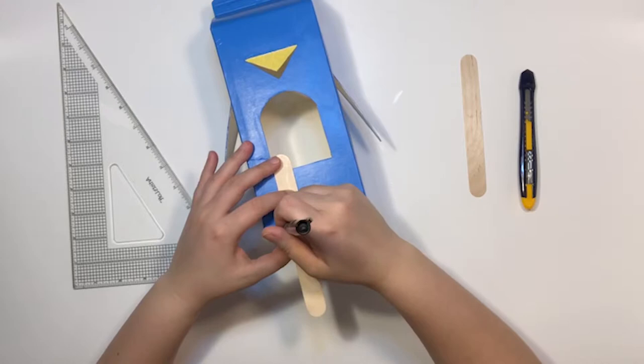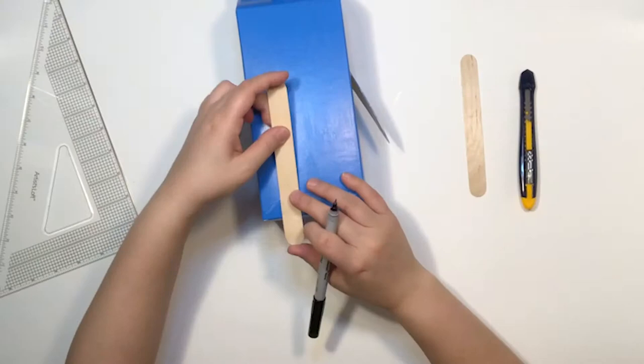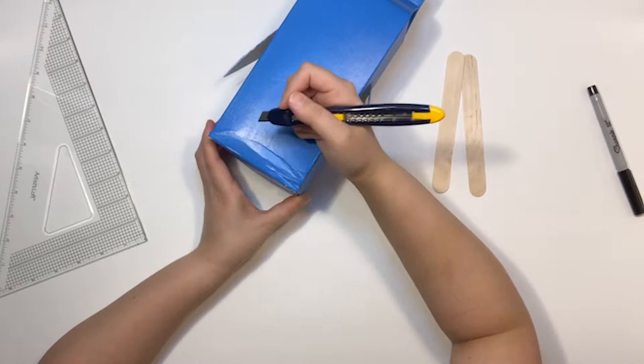Step five: add popsicle stick feet. When the paint is completely dry and no longer tacky, take a popsicle stick and mark the locations of your feet. Flip to the other side and do the same, making sure that the front and back are exactly opposite of each other. Then cut little slits between your marks.